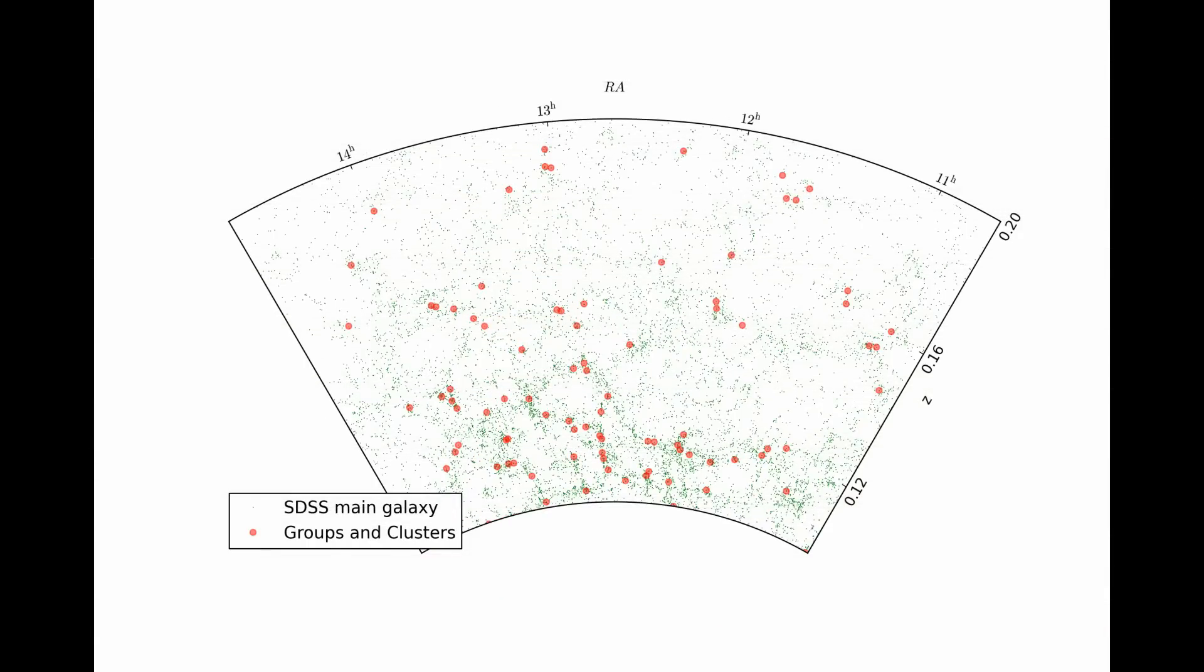As the largest bound systems in the universe, galaxy clusters carry imprints of cosmic growth via the distribution and motion of the surrounding galaxies. They can therefore play a powerful role in testing theories for the origin of cosmic acceleration, complementing geometrical probes like supernovae and baryon acoustic oscillations.